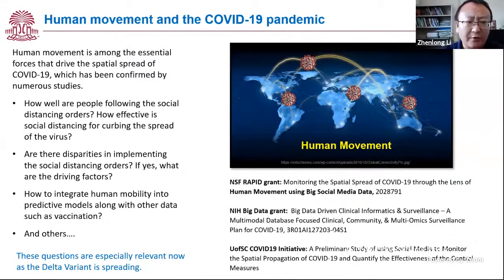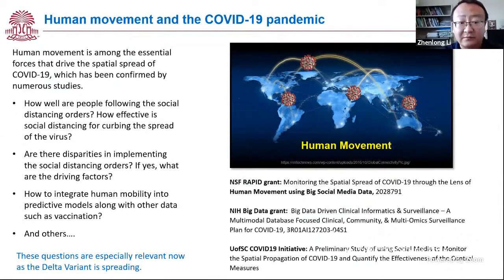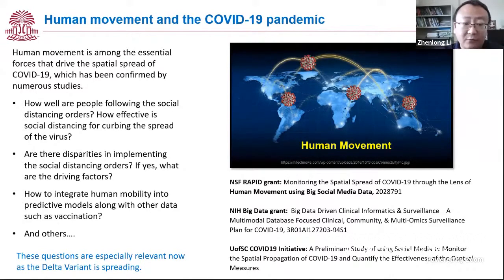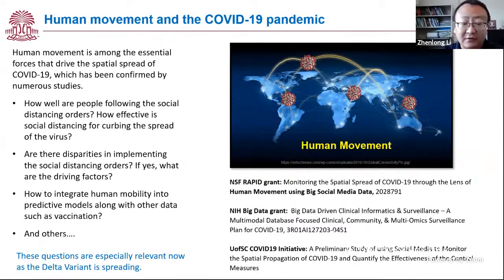For example, how well are people following social distancing orders and how effective are the orders for stopping the spread of the virus? Are there any disparities in implementing these orders and what are the driving factors — economic factors and other disparity patterns? And also how to integrate human mobility prediction models along with other data sources like vaccination data.